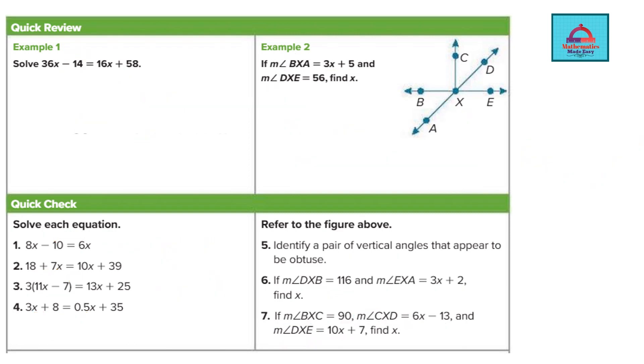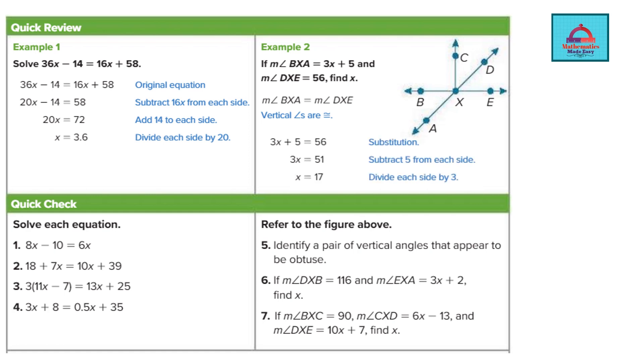So for the first learning objective part 1 example 1, the value for example 1 x is 3.6. That's what we had got and for example 2 because these are vertical angles they are going to be equal and x is going to be 17.